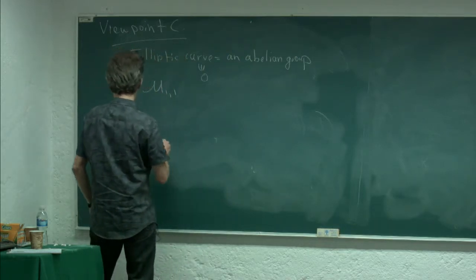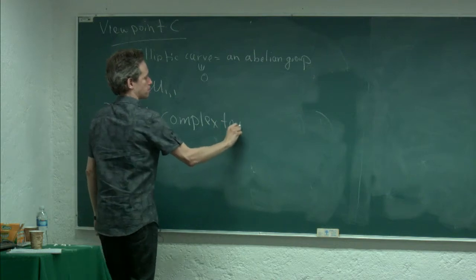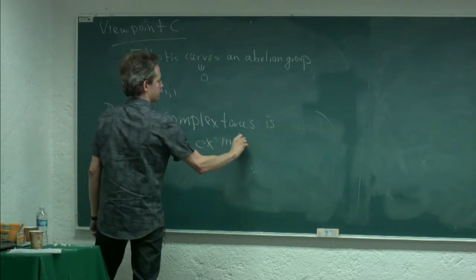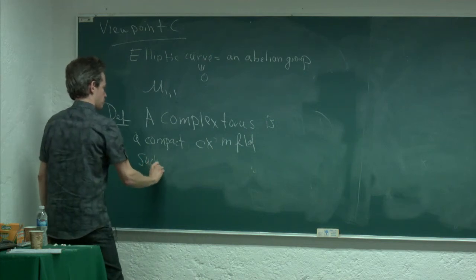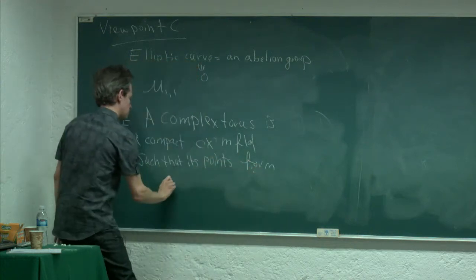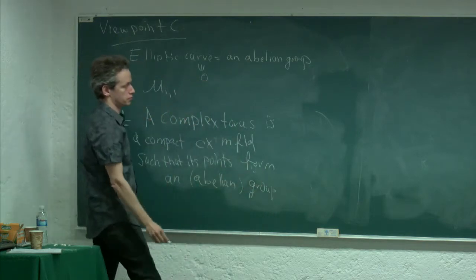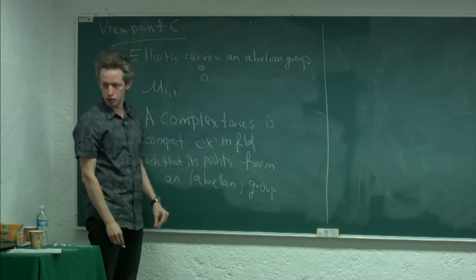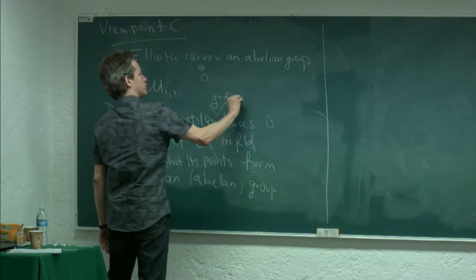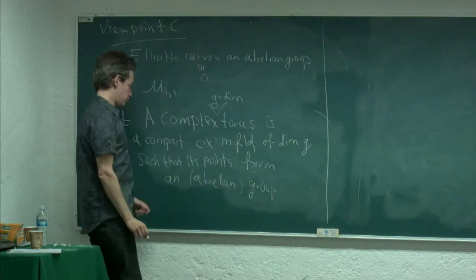Now I'd like to generalize this. Definition: a complex torus is a compact complex manifold such that its points form a group. In fact, you can see that the group is automatically abelian. A complex g-dimensional torus is a complex manifold of dimension g such that the points form a group. I know people usually denote dimension by n, but we'll stick to g.